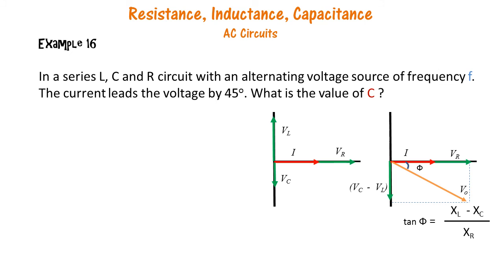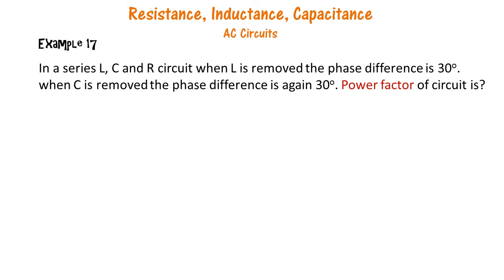So phi is minus 45 degrees. When the inductor is removed, the voltage lags the current by 30 degrees.